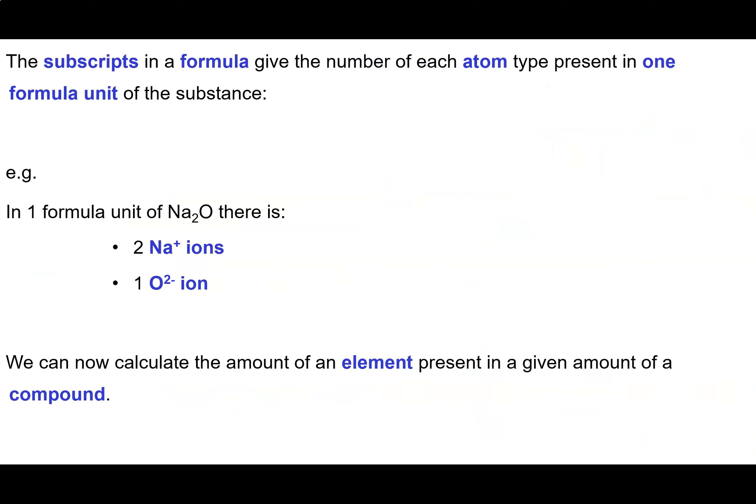The subscripts in a formula give the number of each atom type present in one formula unit of that substance. This works for both molecular substances and also ionic substances.